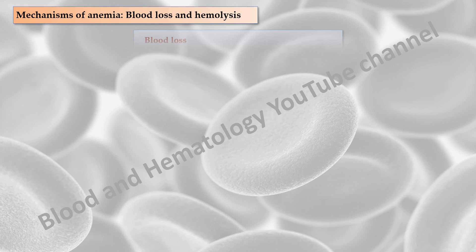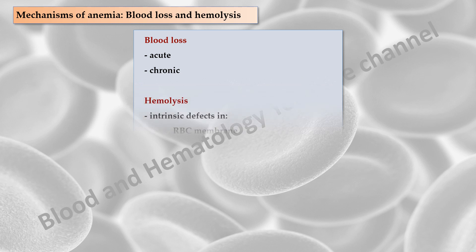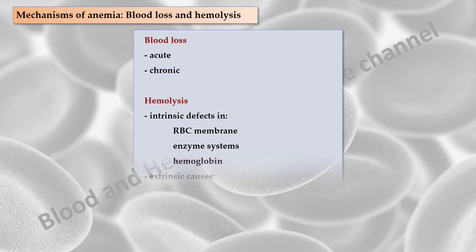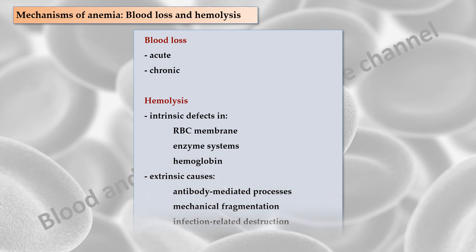Anemia can also develop as a result of acute or chronic blood loss. Increased hemolysis results in a shortened erythrocyte lifespan, thus increasing the risk for anemia. Numerous causes of hemolysis exist, including intrinsic defects in the erythrocyte membrane, enzyme systems or hemoglobin, or extrinsic causes such as antibody-mediated processes, mechanical fragmentation, or infection-related destruction.